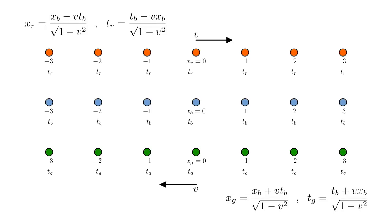The various frames are related by the coordinate transformations of special relativity. For a blue observer with some particular values of the blue coordinates, we can use these to calculate the coordinates of the red and green observers he sees passing by at that instant. Note that the time coordinate in one frame is a combination of the space and time coordinates of the other frame. If all blue observers have the same t blue clock reading, then the red and green observers they see passing by will have t red and t green clock readings that vary throughout space. This means that if two spatially separated events happen at the same time in the blue frame, then they must happen at different times in the other frames — events which are simultaneous in one frame will not be simultaneous in other frames.